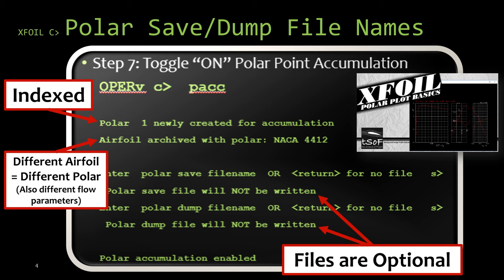Some other information we get about the polar save and polar dump files in this step is that if you look there when we first turned on polar accumulation, it told us that polar 1 newly created for accumulation. While we're running XFOIL, we are actually able to create multiple polars and have them saved in the memory. So if this was not our first time turning on polar accumulation, it would have incremented up and would have let us know polar 2 was newly created or polar 3 was newly created or polar 4 was newly created. And when you do that, it's going to, as you see on the line below that, save in the airfoil that was used when creating that polar.